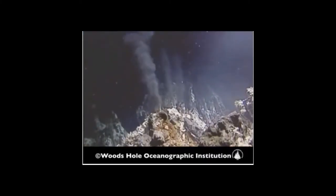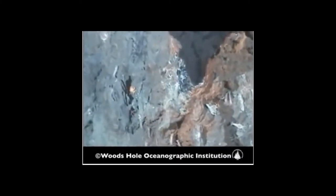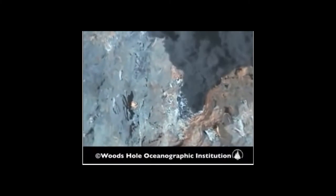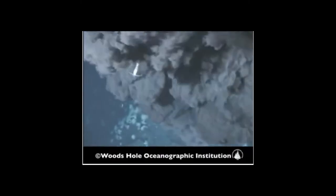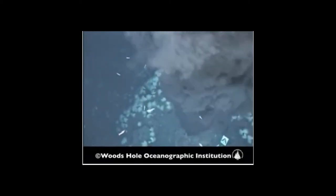Hydrothermal vents are essentially hot springs under the ocean. The main place that we find these high-temperature hydrothermal vents is along the mid-ocean ridge system, which is in fact the longest chain of volcanoes we have on our planet. The water is sufficiently hot that it could probably melt many metals, and is able to be superheated because of the overlying pressure of the ocean water above. In these places along the mid-ocean ridge, the ocean is perhaps 2,000 to 4,000 meters deep.